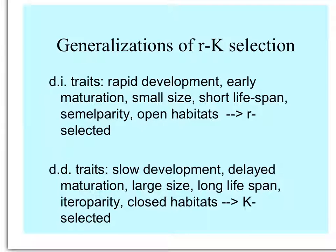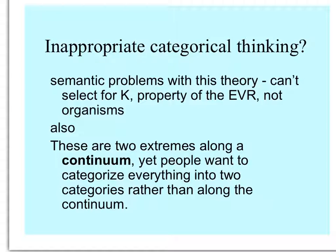Density-dependent traits associated with K-selected species include slow development, delayed maturation, large size, long lifespan, iteroparity, and closed habitats. To many ecologists, this was inappropriate categorical thinking — you can't really select for the carrying capacity of the environment because it's not a property of the organism. Especially, these are not just one way or the other, but two extremes on a continuum, yet many people categorized everything into two big categories. These terms are still commonly used in ecology.